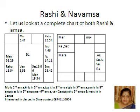So here: Moon is in the second Amsa, Ketu is in the fifth Amsa, Jupiter is in the second Amsa, Lagna is in the fifth Amsa, Sun is in the eighth Amsa, Saturn is in the fifth Amsa, Mercury is in the sixth Amsa, Venus is in the second Amsa, Rahu is in the fifth Amsa, and Mars is in the first Amsa.